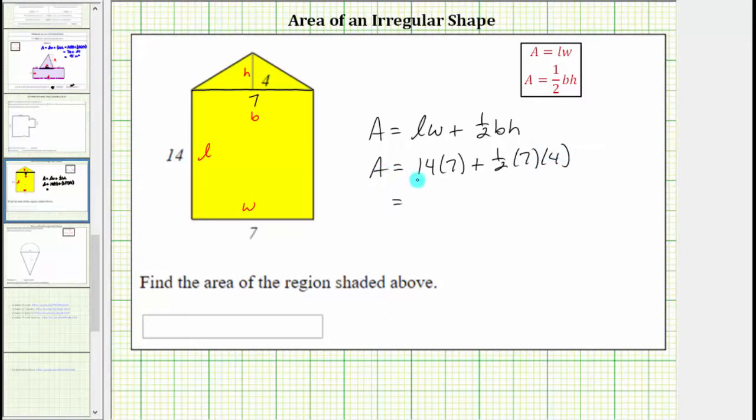Now simplifying, 14 times seven equals 98, plus, well, seven times four is equal to 28. One-half times 28 is equal to 14.